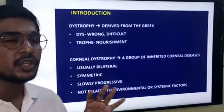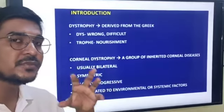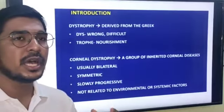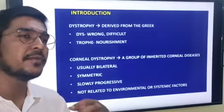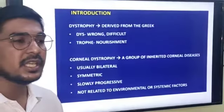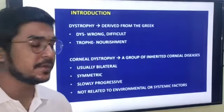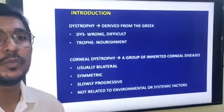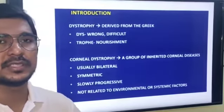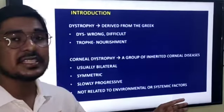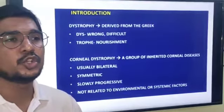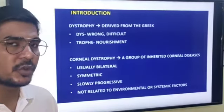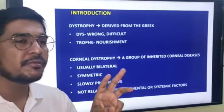When we call something a dystrophy, there are certain features important for MCQs. It is usually bilateral — occurring in both eyes at the same time — and symmetric. It is slowly progressive, meaning it doesn't appear suddenly in a day or week. It is also not related to any environmental or systemic factors. If there is a systemic factor involved, it would not be called a corneal dystrophy — but there are exceptions.